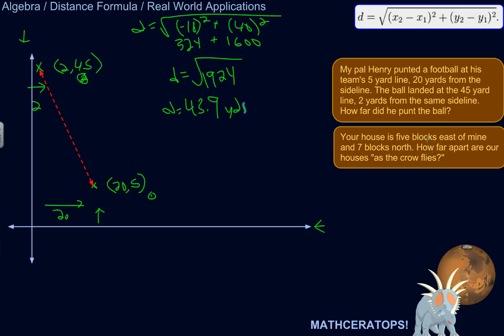Your house is five blocks east of mine and seven blocks north. How far apart are our houses as the crow flies? Meaning, straight distance, not where we have to actually drive on the streets, but if I were to fly straight from your house to my house. Or vice versa. How far are they? Why would you need to know this? I don't know. Maybe you were just curious. So this whole five blocks east, seven blocks north business is that idea of a coordinate plane. A distance is relative to something else.